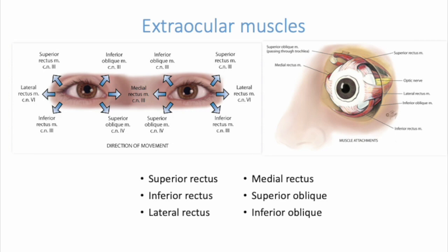The human brain has binocular single-image visual systems, meaning both eyes are looking at the same time and focusing on objects. The movement of the extraocular muscles is stimulated by three cranial nerves: cranial nerve 3, 4, and 6. Cranial nerve 3, the oculomotor nerve, innervates the superior, inferior, medial rectus, and inferior oblique muscles. Cranial nerve 4, the trochlear nerve, innervates the superior oblique muscles only. Cranial nerve 6, the abducens nerve, innervates the lateral rectus muscles, which abducts the eye.